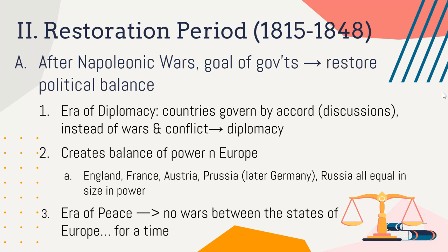Ultimately — spoiler alert — Napoleon is unsuccessful, though it takes two tries. We learn to never invade Russia in the winter because it never works out. Napoleon is defeated in 1815. After his defeat, we have the Restoration Period, a period where the political balance is restored. Governments that had been taken over by Napoleon, that had their kings and queens deposed and replaced by Napoleon's siblings and relations, now have to figure out what to do.